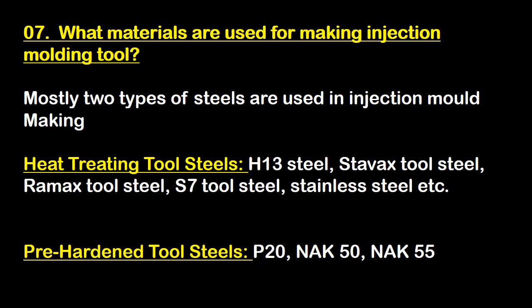Question number seven: what materials are used for making injection molding tools? Mostly two types of steel are used in injection mold making. First is heat-treated tool steel — H13 steel, Stavax tool steel, Ramex tool steel, S7 tool steel, and stainless steel. Second is pre-hardened tool steel — P20, NAK50, and NAK55.